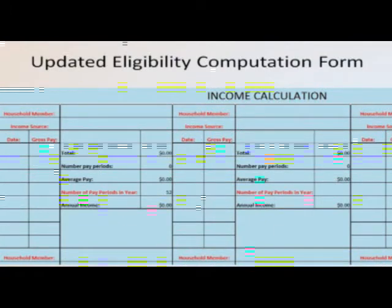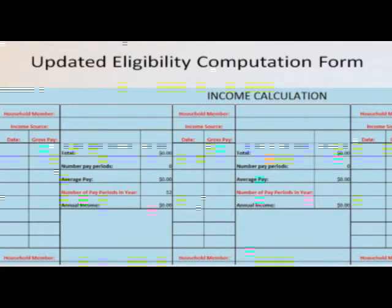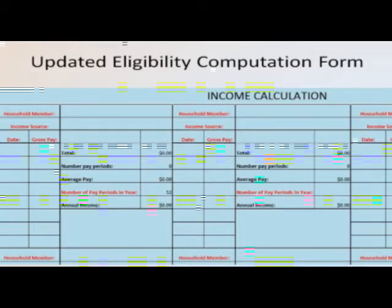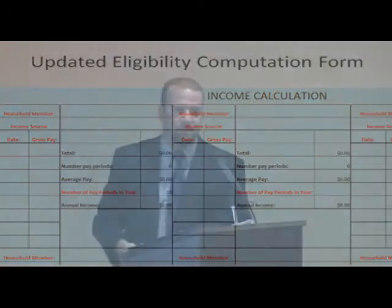The top third of this form — it's a one-page form — now has a new layout for how you add information about income. There are now six different places where you can add a household member's name, what type of income they have, and the amount of that income. I'll demonstrate this in just a minute.